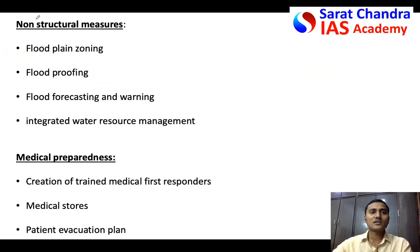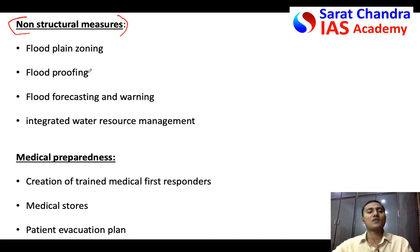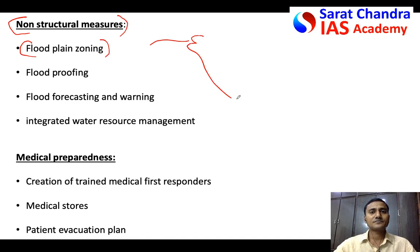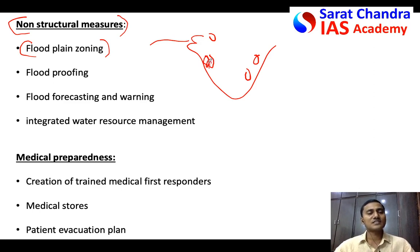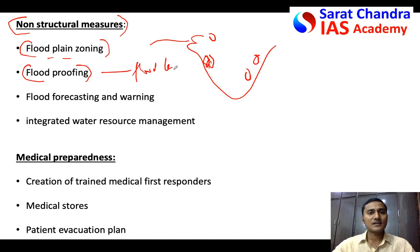Non-structural measures involve keeping people away from flood water. The first is flood plain zoning — identify flood plains across India and avoid constructing heavy infrastructure or settlements in highly flood-prone areas. If needed, agriculture can be developed there using flood-tolerant crops. Just like earthquake zoning, flood plains should be planned accordingly. Flood proofing means identifying the general flood level recorded over the last hundred years and constructing critical structures above that level.